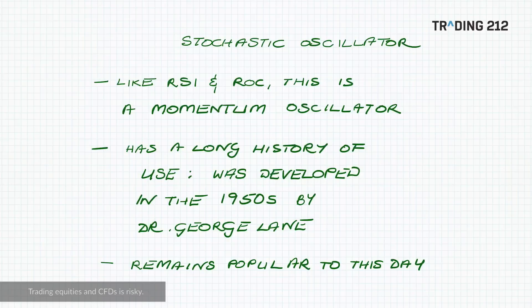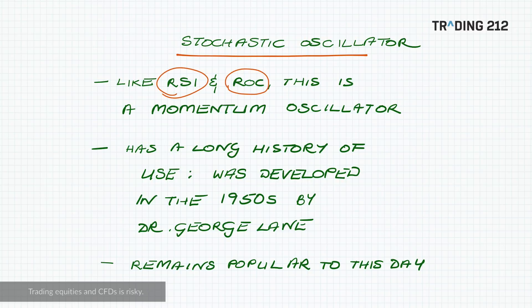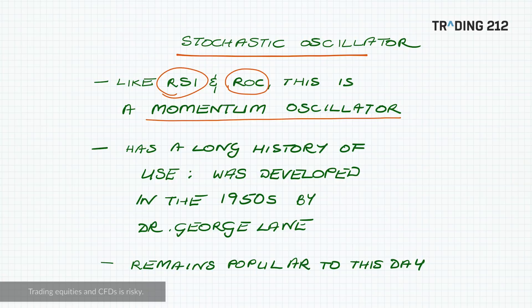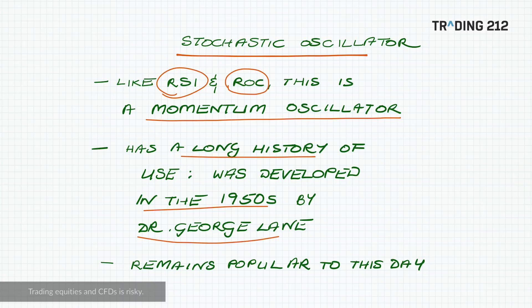Let's take a look at what the stochastic oscillator is. The stochastic oscillator works by looking at price momentum, the same thing as the RSI and the rate of change oscillator which we looked at in previous videos. They're all momentum oscillators, basically looking at the rate at which price is changing. The stochastic oscillator is a pretty venerable thing — it was actually developed in the 1950s by a technical analyst called Dr. George Lane and remains a very popular technical indicator to this day.